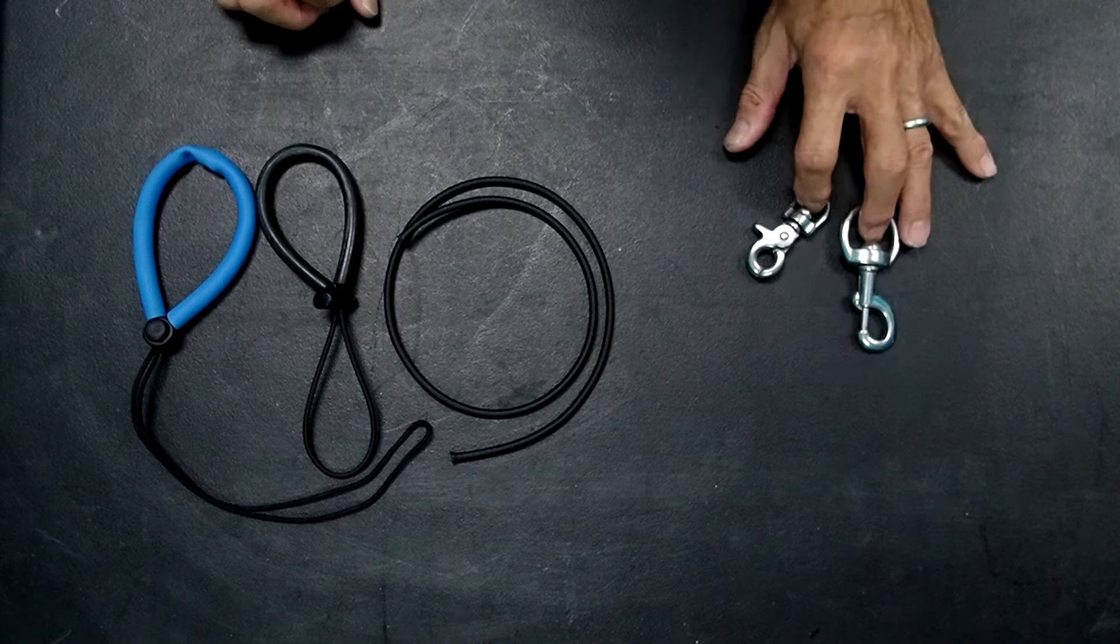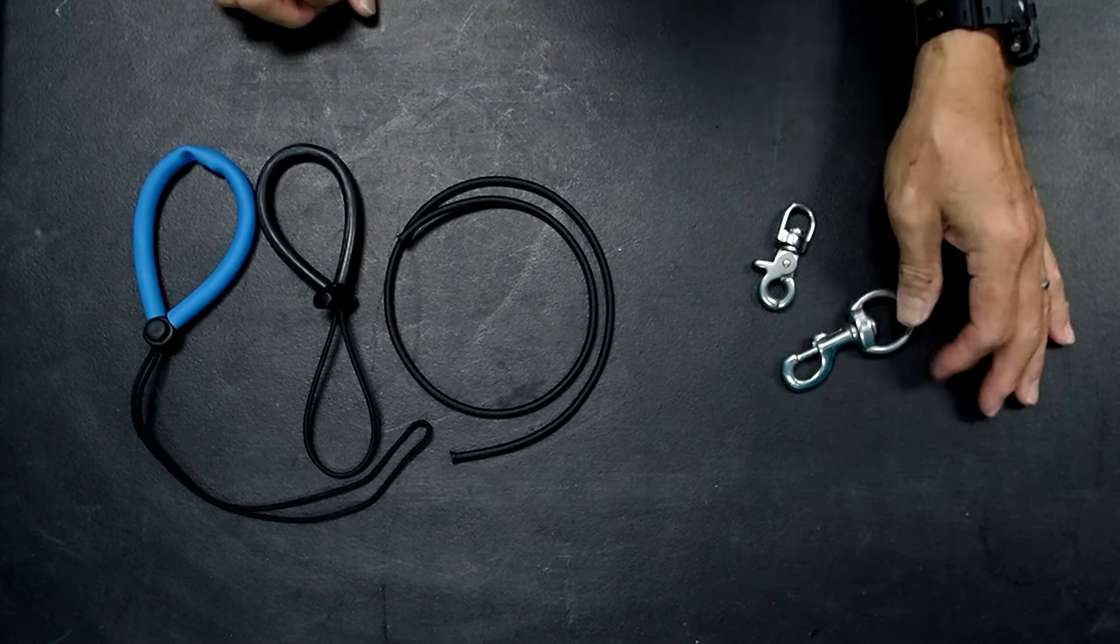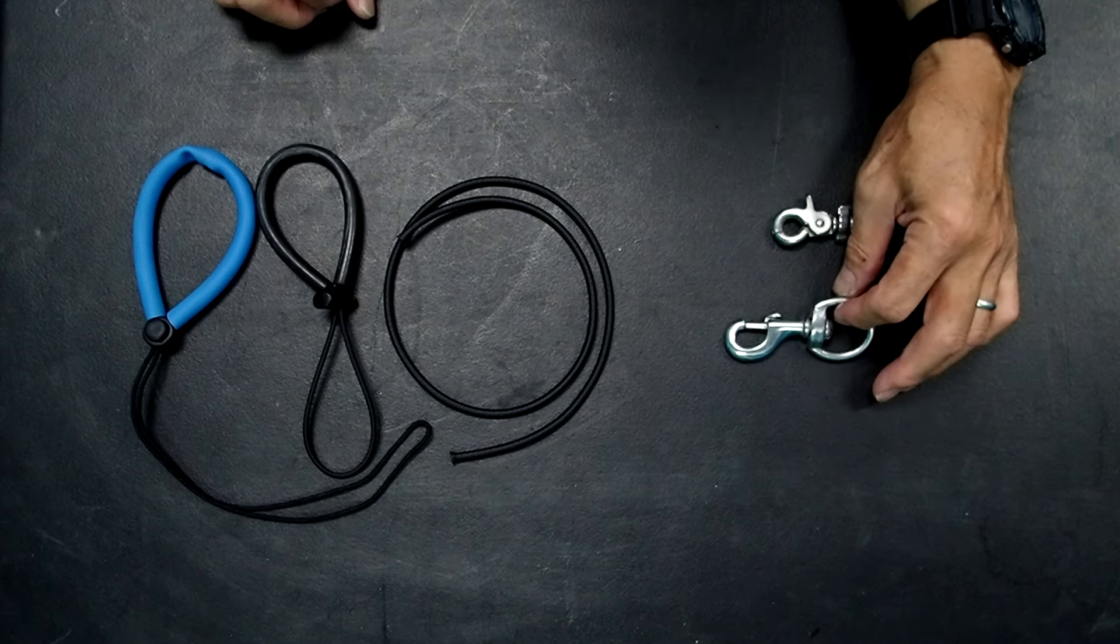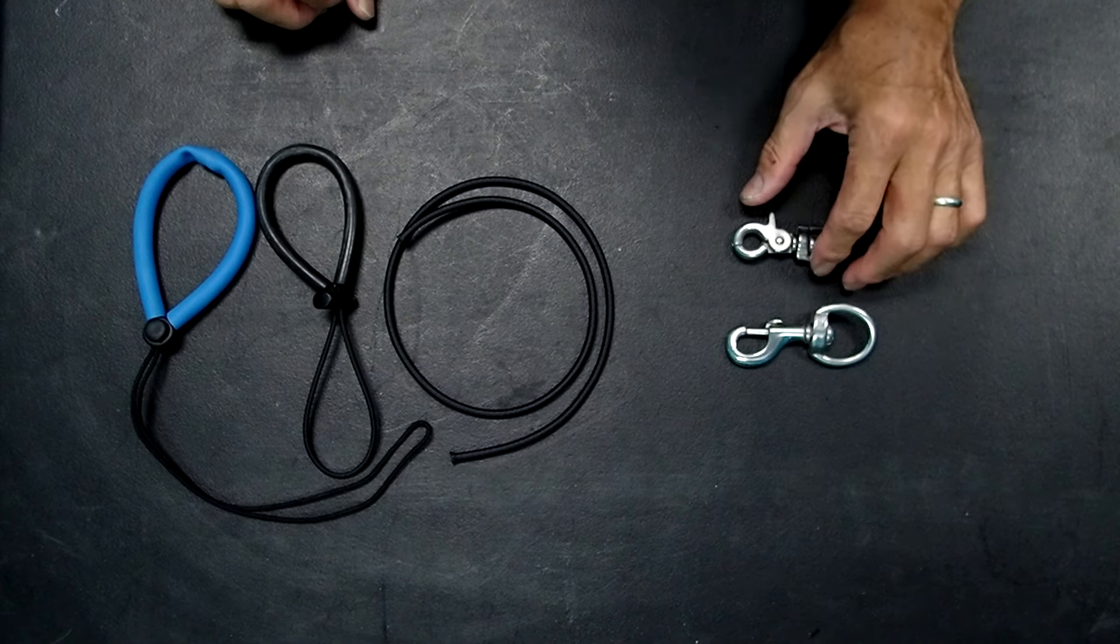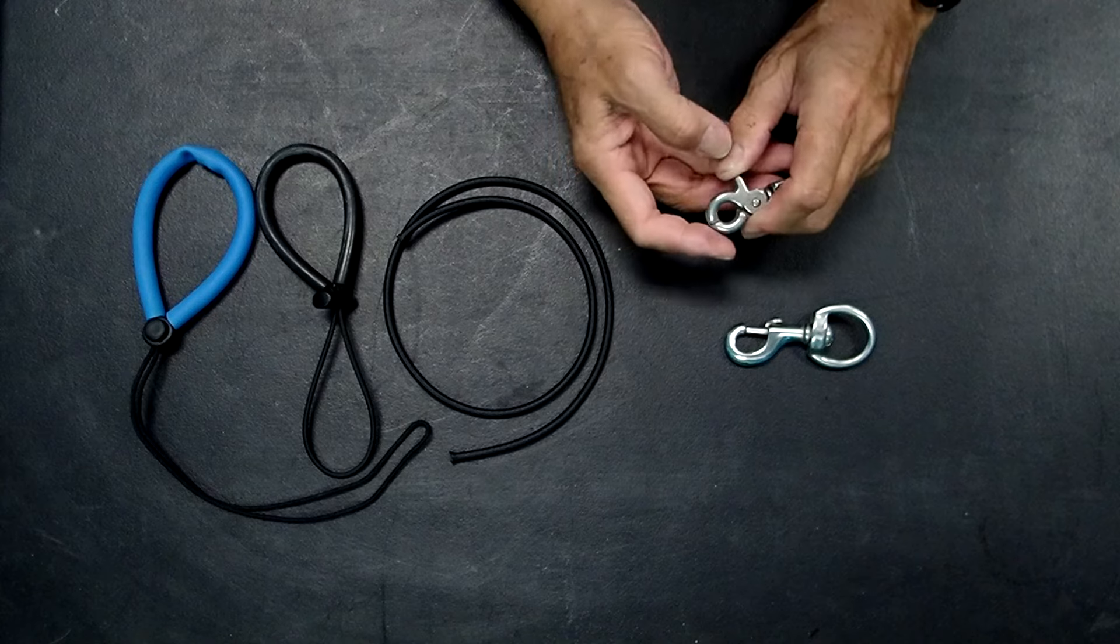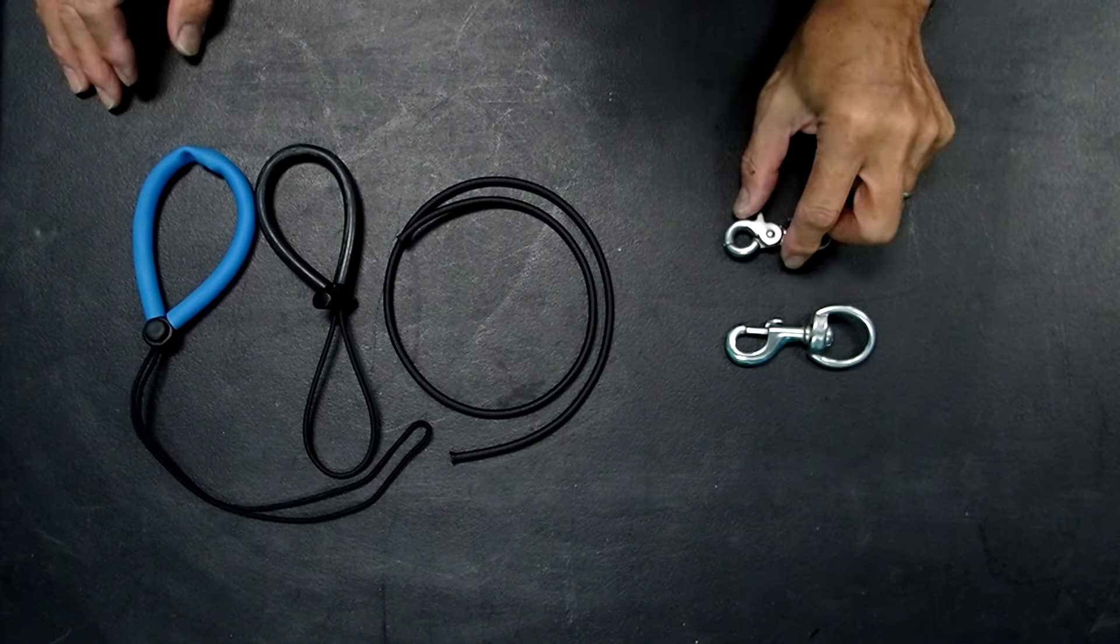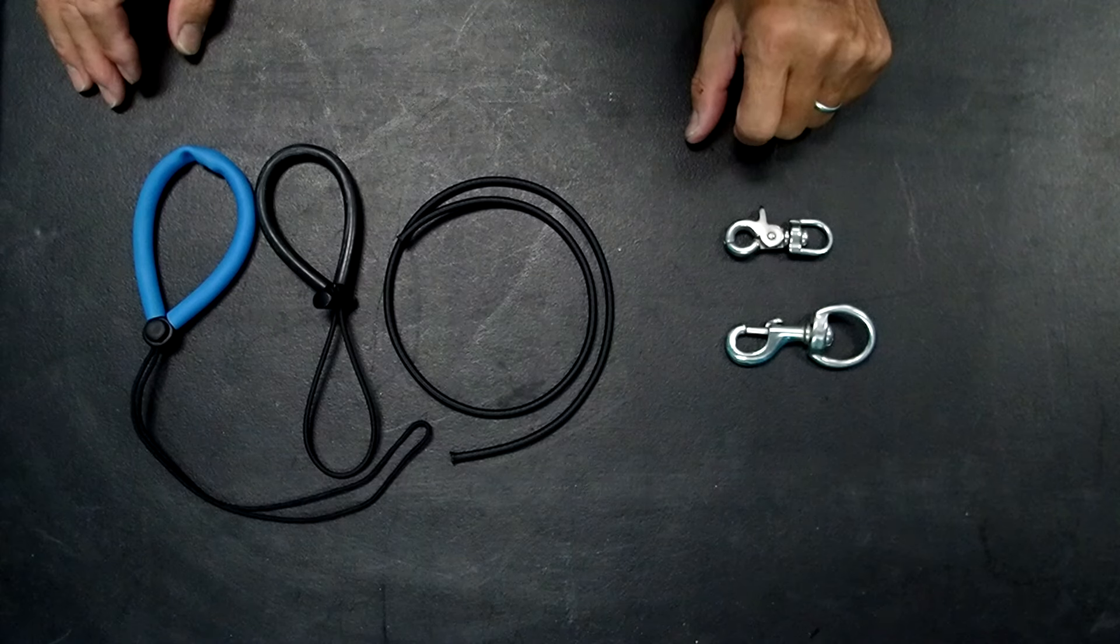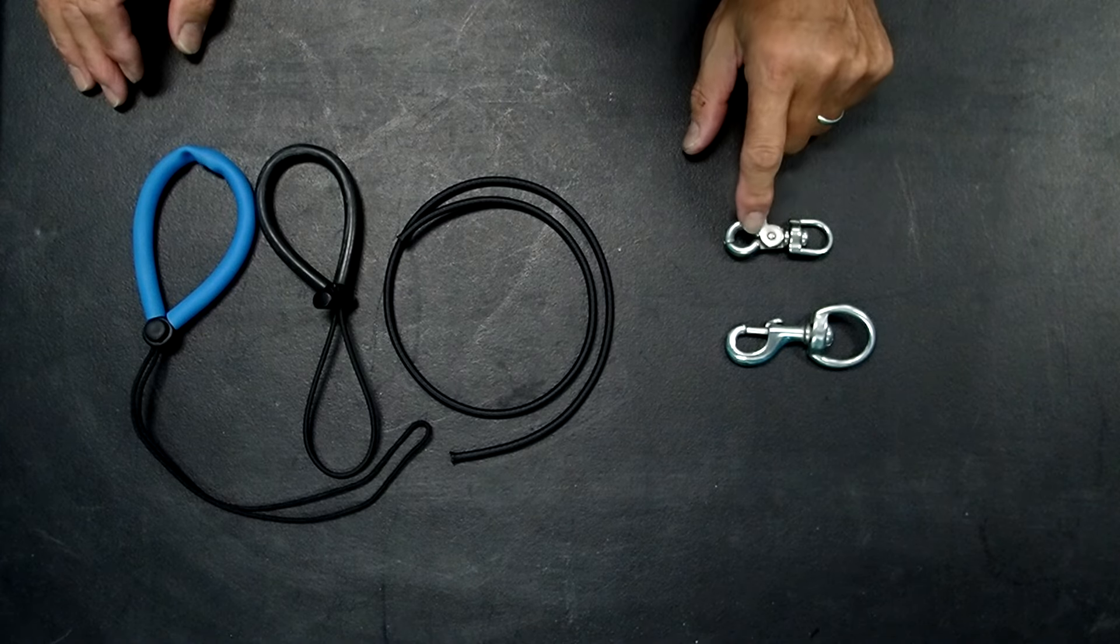You also have the opportunity to use some clips. This, for example, is a standard bolt snap. And you can use this to hold things onto a D-ring when you're not using it. And for really important items, things that I really don't want to lose, what I actually use instead of a bolt snap is a trigger snap like this. This particular trigger snap is very reliable. It's made by a company called Sea Dog, which manufactures stainless steel trigger snaps from Thailand.